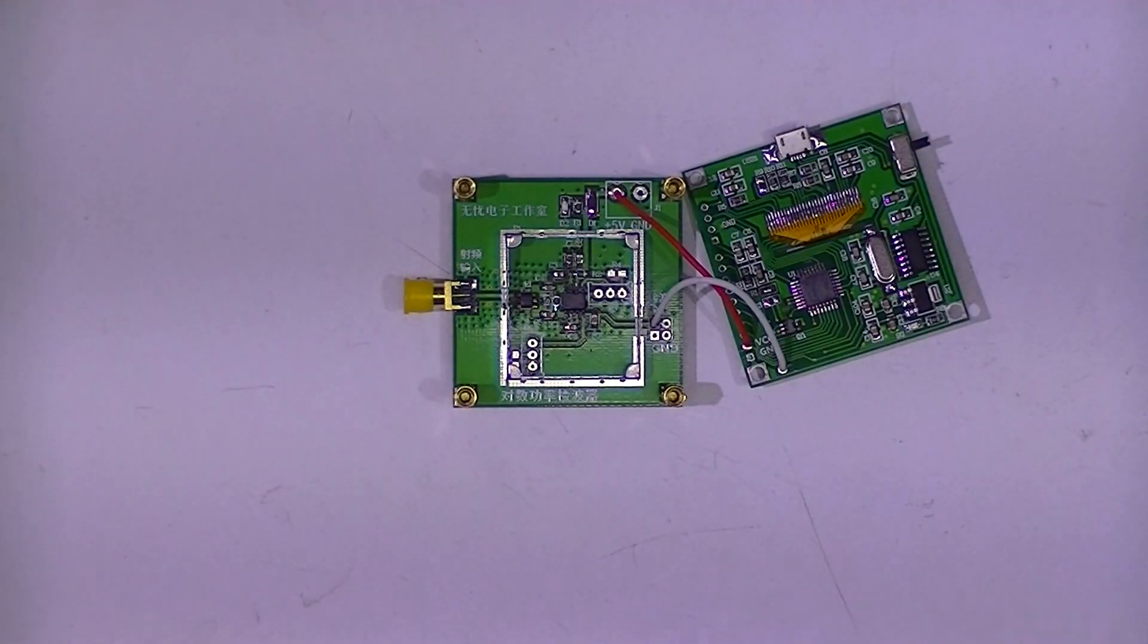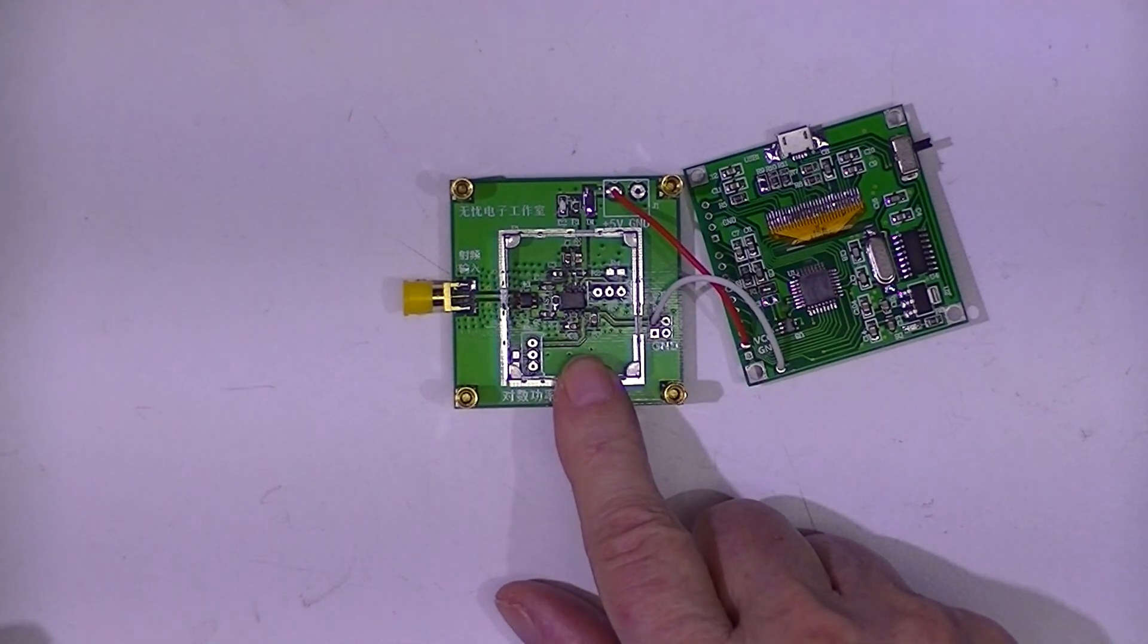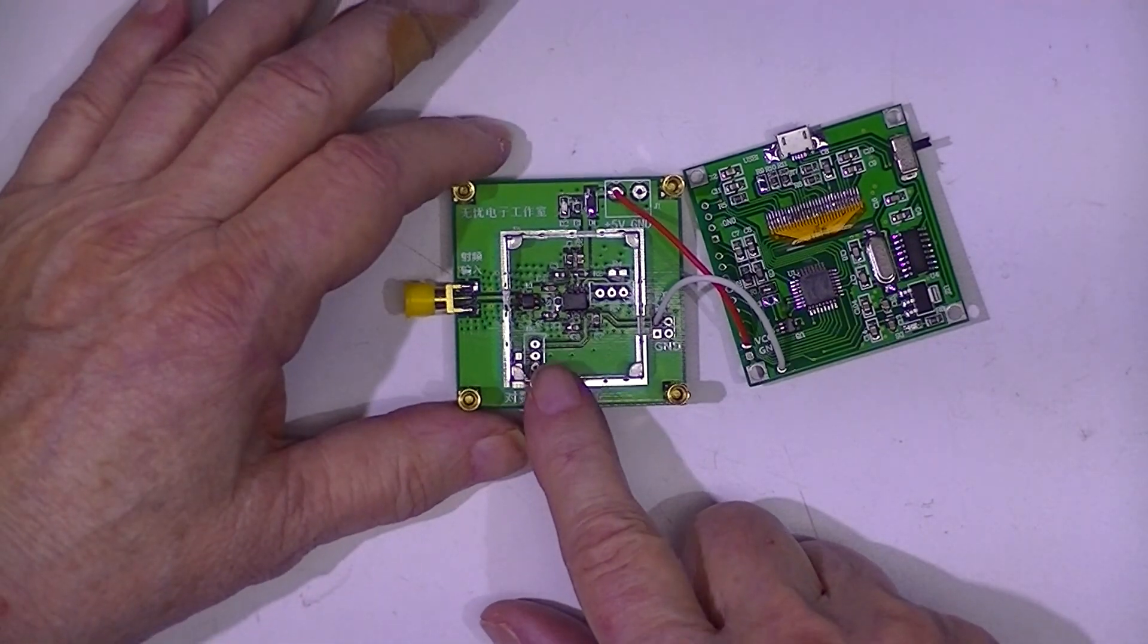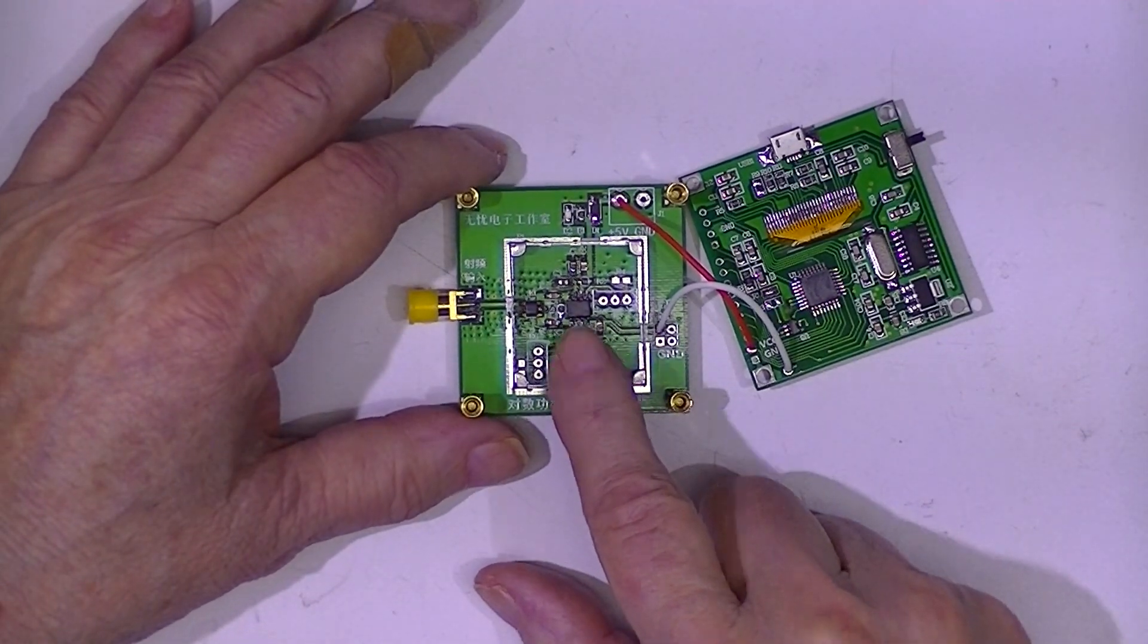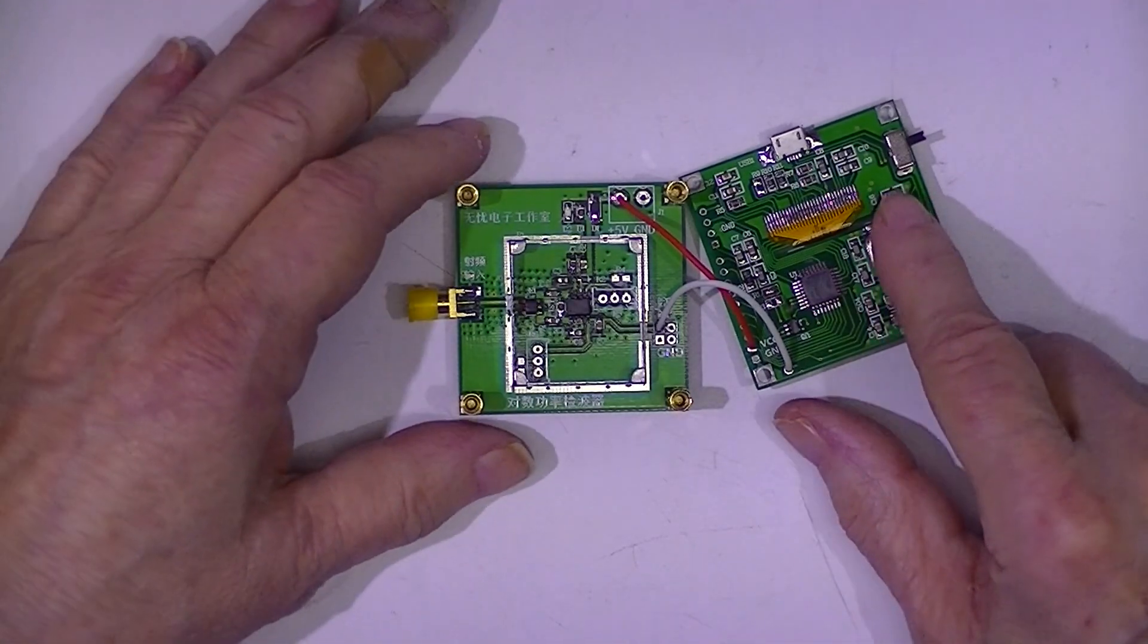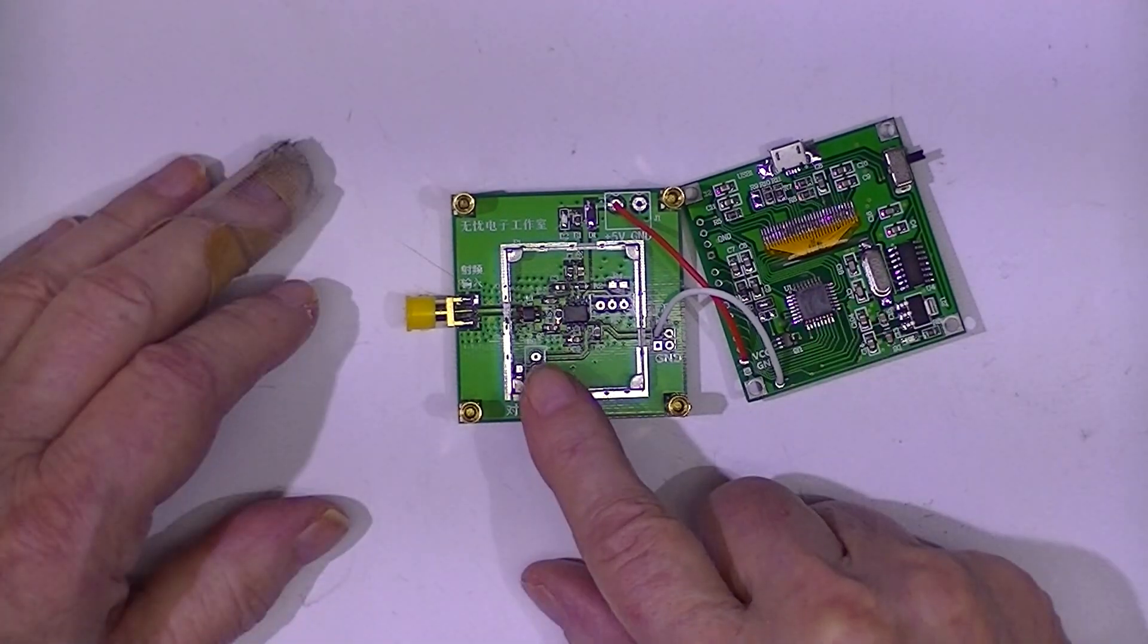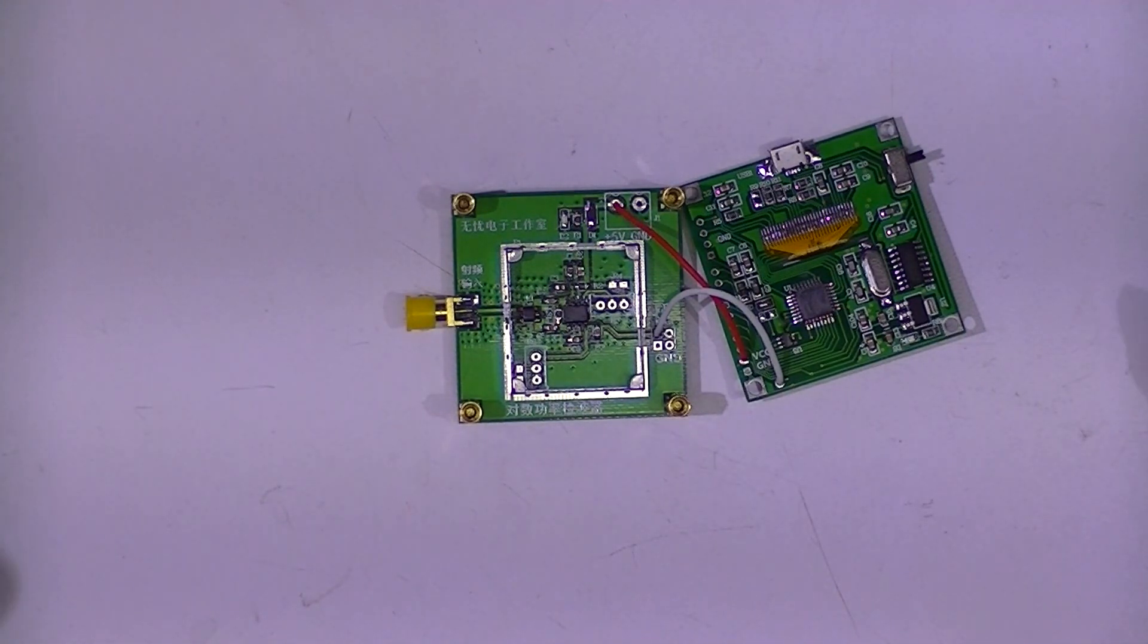So what I did was I opened the thing up and took the board apart and took the shield off the RF part. And it appears to me that this is an RF board only with a logarithmic amplifier on it or power detector. And this is the display driver and some memory. If I look into this connector, I don't get any continuity at all.